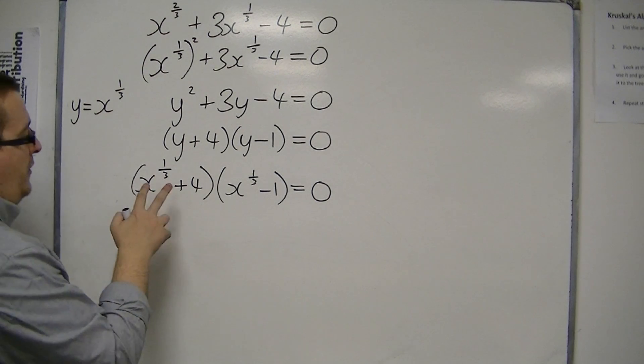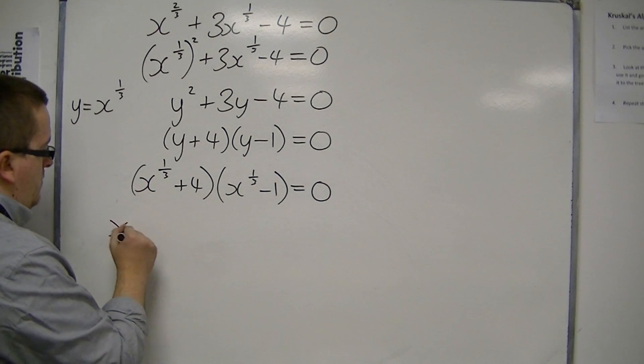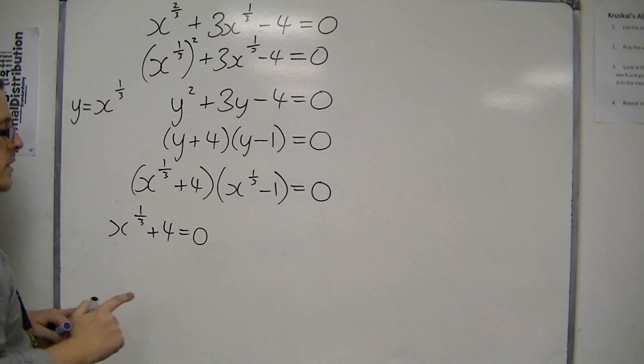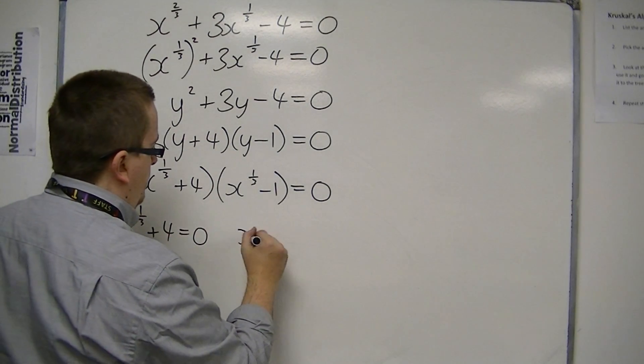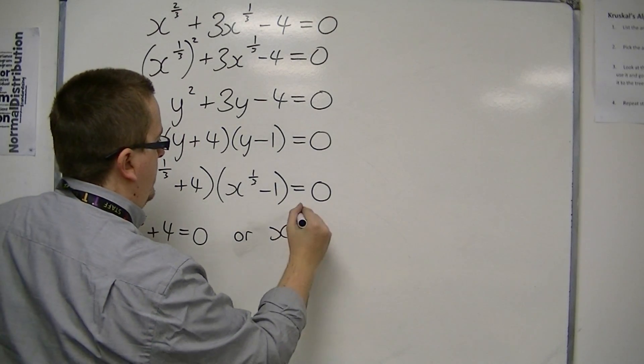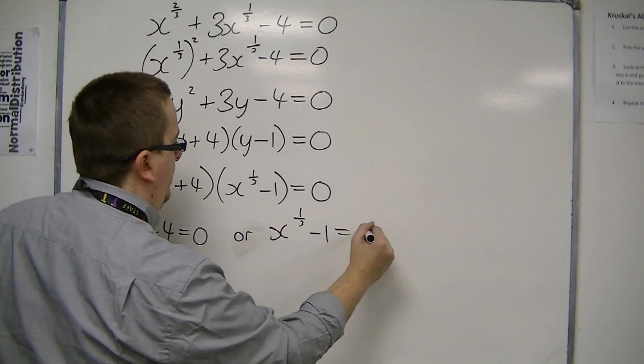So that means that either this bracket is 0, in which case x to the 1 third plus 4 is 0, or this bracket is 0, so x to the 1 third minus 1 is 0.